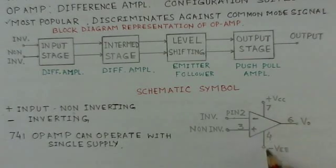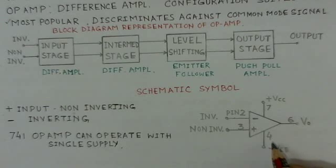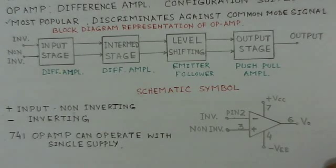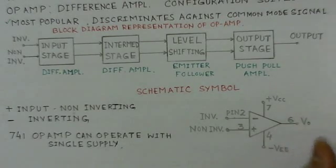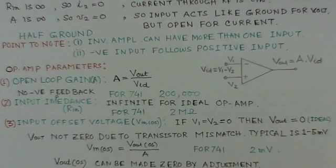The operational amplifier can work with two supplies — a positive and a negative supply — but you can also use only one supply by grounding the negative supply. This gives the advantage of a single-ended output, which goes from zero to the positive direction only, and this kind of output can be useful for additional circuits.